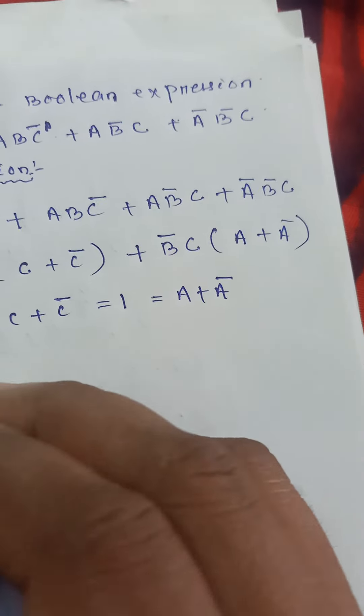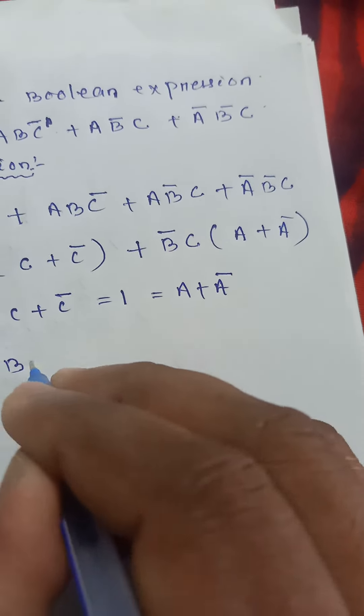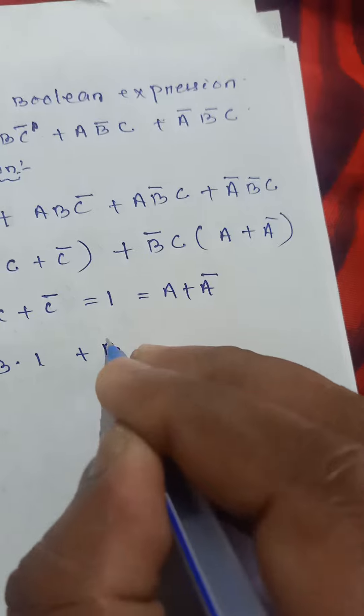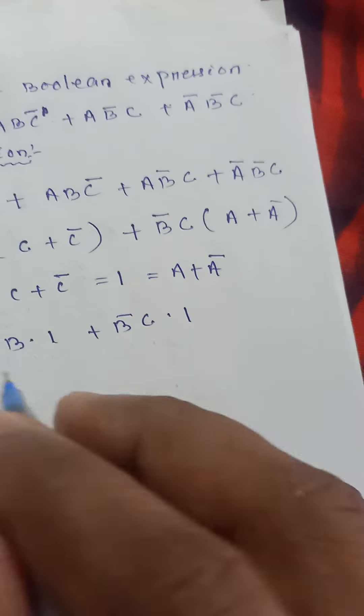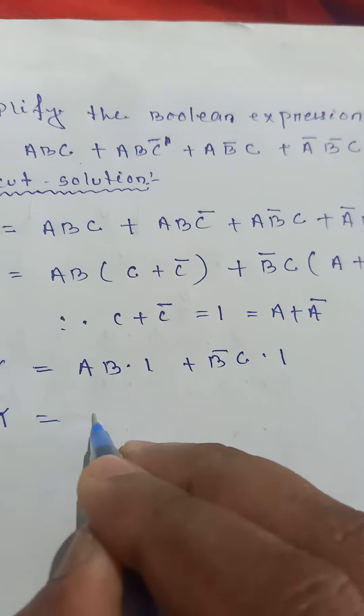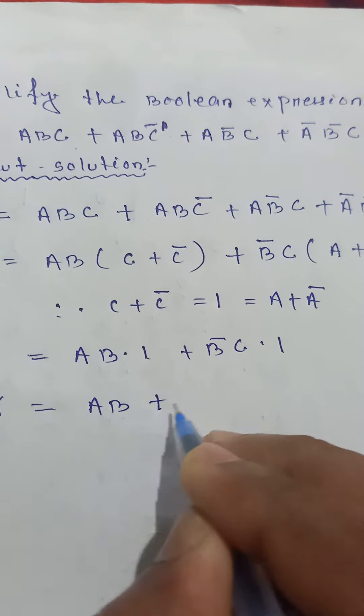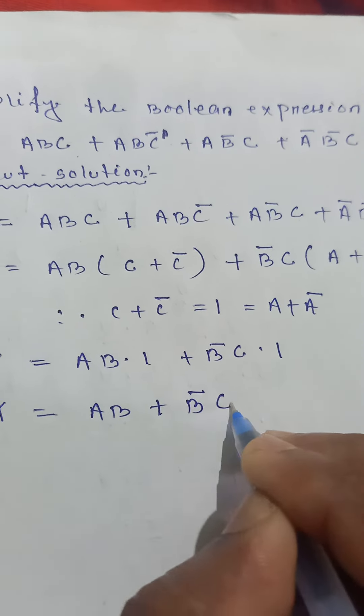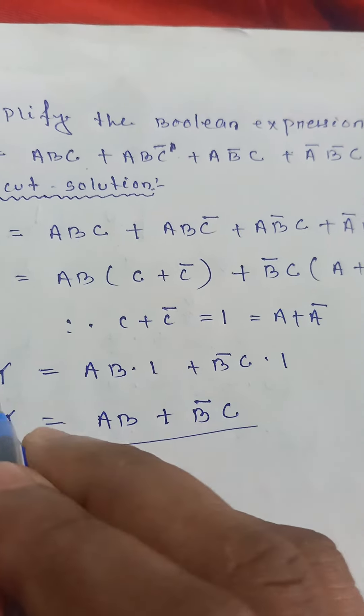Now, Y equals AB into 1 plus B bar C into 1. So Y equals AB plus B bar C. This is the final expression.